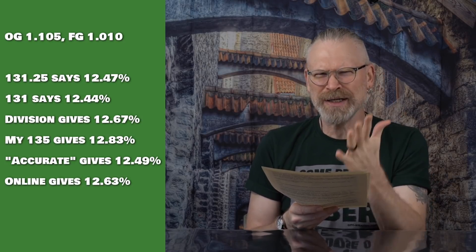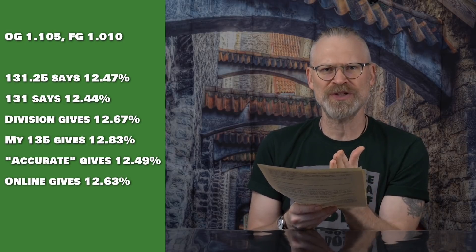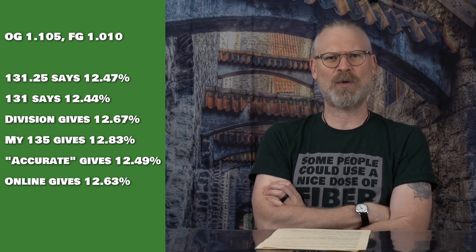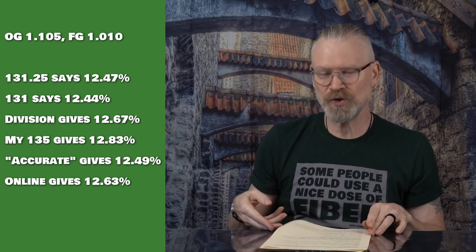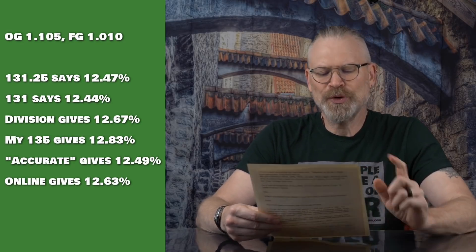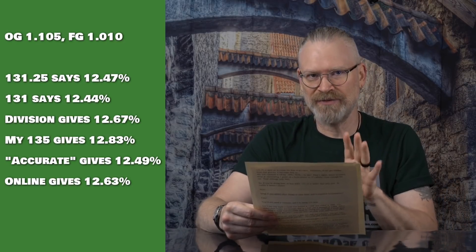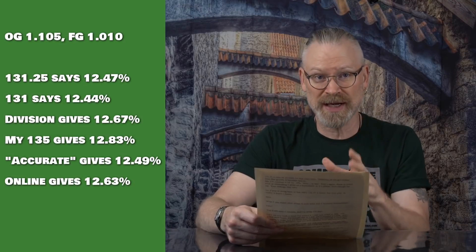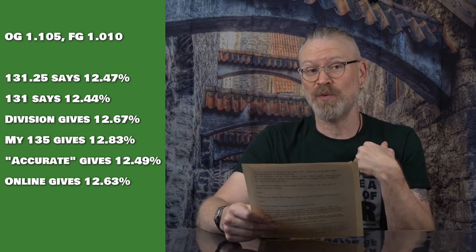0.34 of 1% is the difference between saying it's 12.34% versus 12%. Honestly, does it matter? Most people just want to know if it's like 6, 8, 10, 15% — those are the numbers they really want to hear. On brewunited.com — I'll put the link below — there's a more complex calculation I use sometimes as a check. They came up with 12.63%, which is 0.16% more than the 131.25 constant and just 0.2% away from my constant of 135. The numbers are all over the place, but in reality from highest to lowest it's about half a percentage point difference — not a big deal.